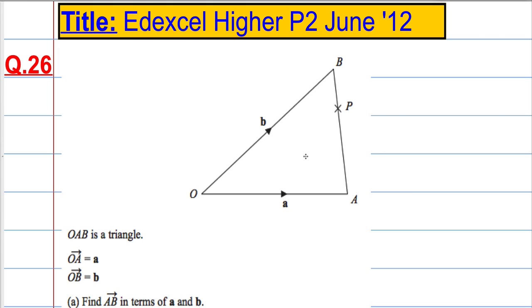We've got a triangle OAB where the vector from O to A is equal to A. So to go from here to here, we go A. To go from O to B, the vector OB is denoted B.